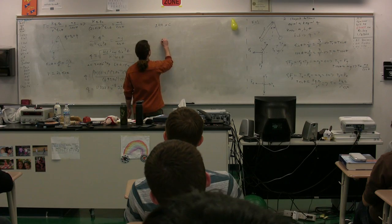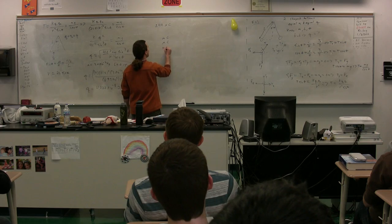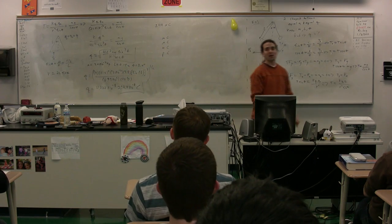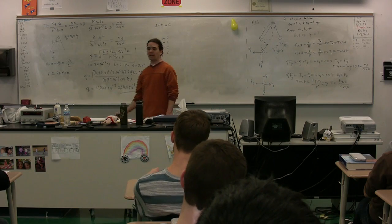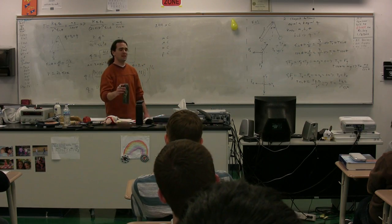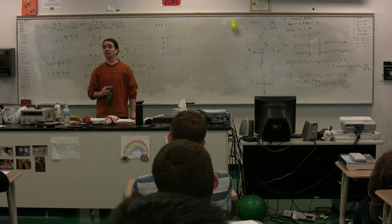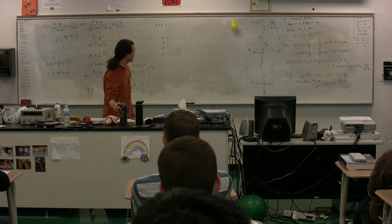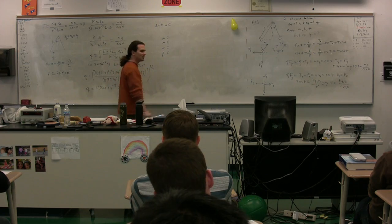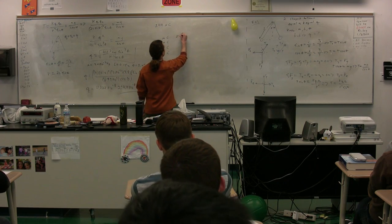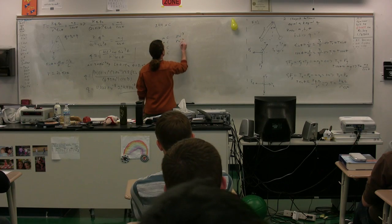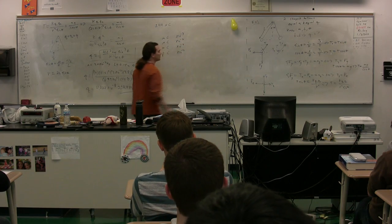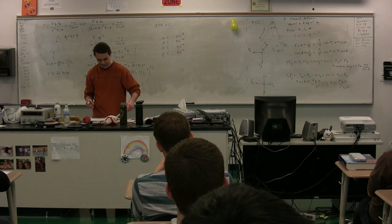Just to remind you, we have millicoulombs, microcoulombs, nanocoulombs, and picocoulombs — these are going to come up and are things you need to know. If you forget on the AP test they will be in the table of information, but time is important so you want to have these memorized. They are times 10 to the negative 3, times 10 to the negative 6, times 10 to the negative 9, and times 10 to the negative 12. Please keep those in mind.